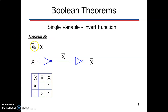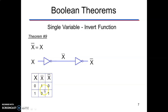The next theorem: x double bar equals x. If we give x as input to an inverter, we get x̄. Applying another inverter gives x̄̄, which equals x. If we complement 0 we get 1; complementing again gives 0, which is x. Similarly, complementing 1 gives 0, and complementing 0 again gives 1, which is x.